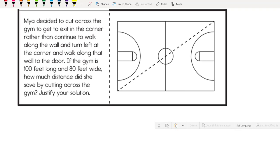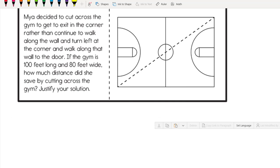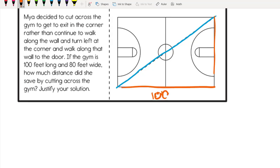For the last one, we've got a basketball court. Maya decided to cut across the gym to get to the exit in the corner rather than continue to walk along the wall and turn left at the corner. So Maya is cutting across through the middle of the gym. If the gym is 100 feet long and 80 feet wide, how much distance did she save by cutting across the gym?